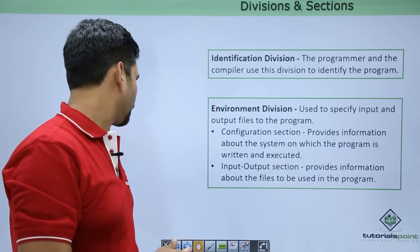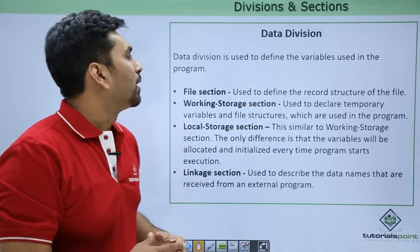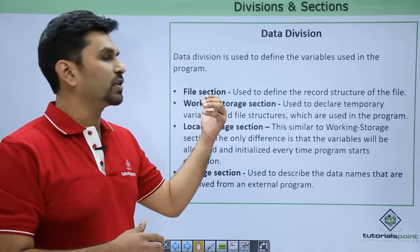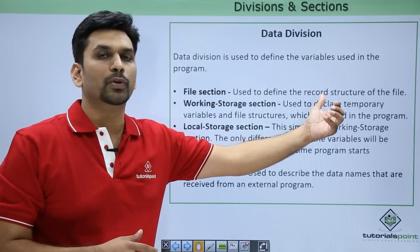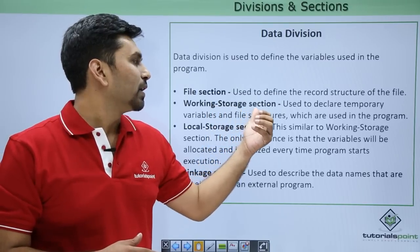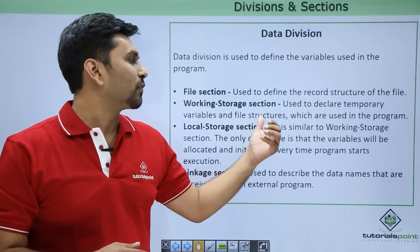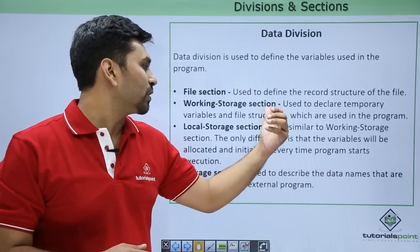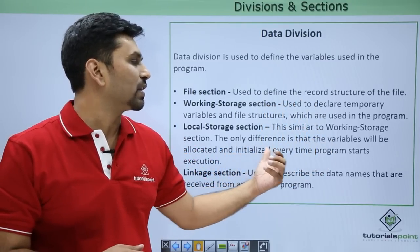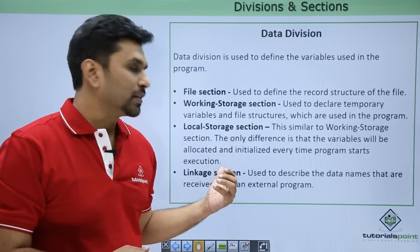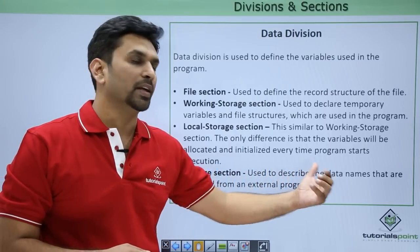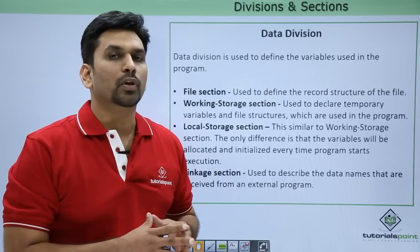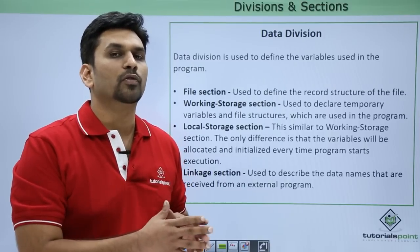The data division is used to define the variables used in the program. It has four sections. The file section defines the structure of files used in the program. The working storage section declares temporary variables and file structures. The local storage section is similar to working storage, but variables are allocated and initialized every time the program starts execution. The linkage section describes data names received from an external program — it is used when calling a program from another COBOL program.